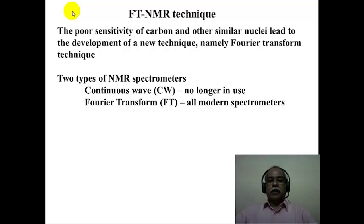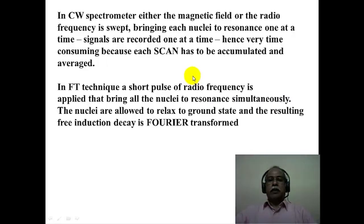There are two types of NMR spectrometers: continuous wave NMR and Fourier transform NMR. Continuous wave NMR is no longer in use — it was the original development. All modern spectrometers are Fourier transform NMR spectrometers. In the continuous wave NMR spectrometer, the magnetic field is scanned while the radio frequency is kept constant, bringing each nucleus to resonance one at a time. For example, 60 MHz NMR means the operating frequency is 60 MHz and the magnetic field strength is varied over the spectral scan width.